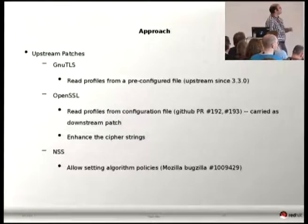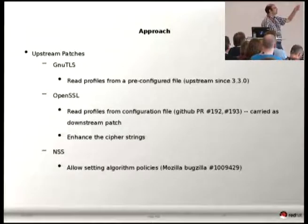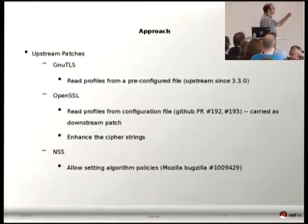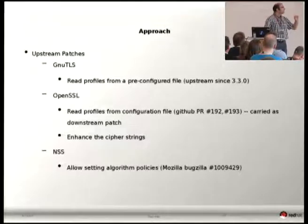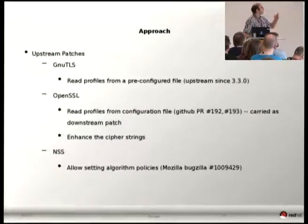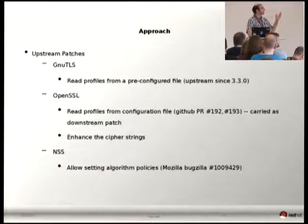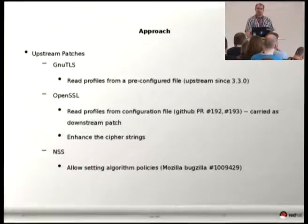Our current state is that we have already sent patches in GnuTLS — they're upstream, which was pretty easy for me because I was the upstream maintainer of GnuTLS — and we have pull requests in OpenSSL and NSS, all of which are under upstream consideration. For OpenSSL, we know that upstream is very happy with these patches, but they're not merged yet, so we hope it will be soon.